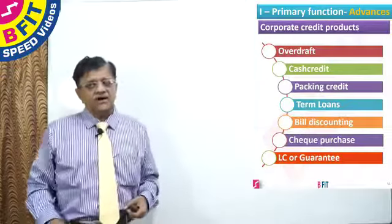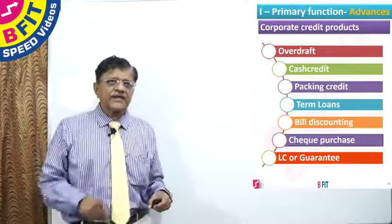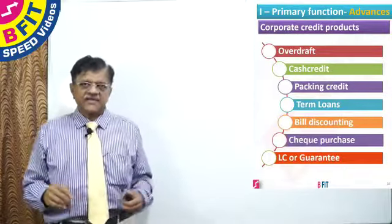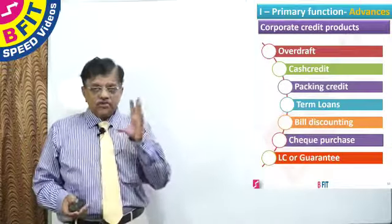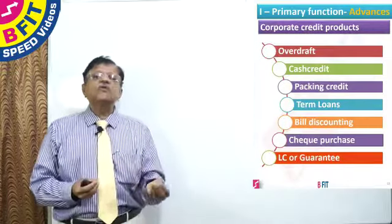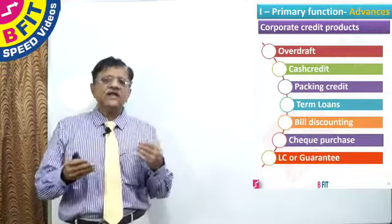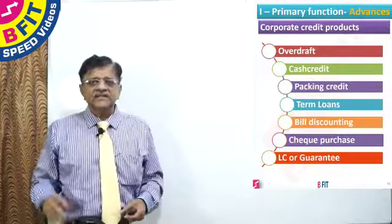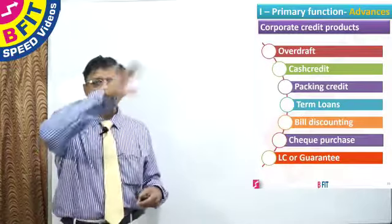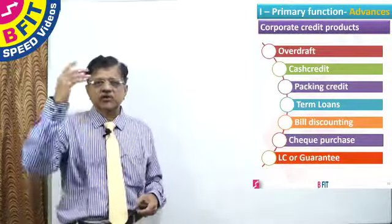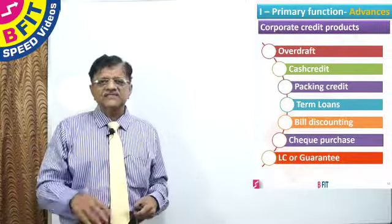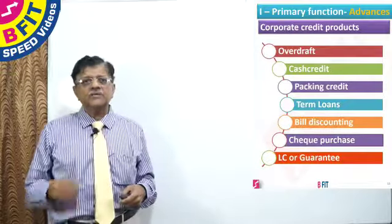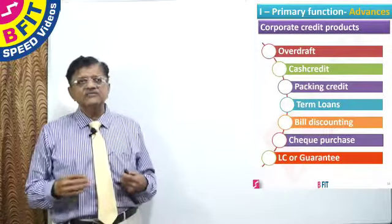What are the corporate credit products of banks? Under corporate credit, first is overdraft. A corporate borrower is given overdraft or cash credit. For example, a corporate with a current account in credit balance may come and say: I need an overdraft of 5 crores. I will give you my headquarters worth about 10 crores under a mortgage. The bank verifies the value of the corporate headquarters, takes the mortgage of that building, and gives an overdraft.